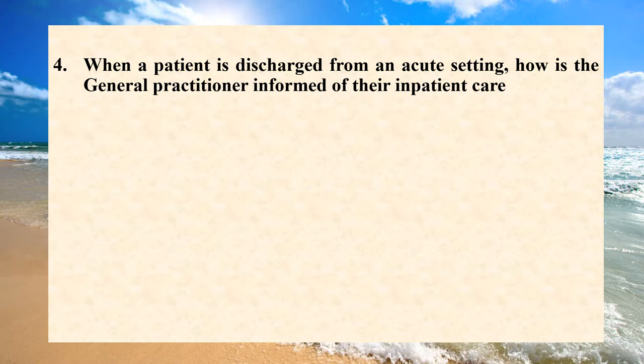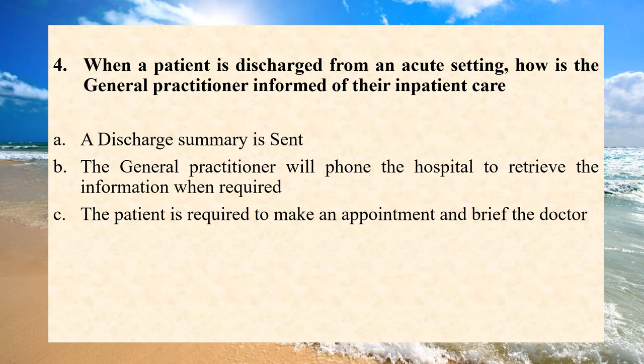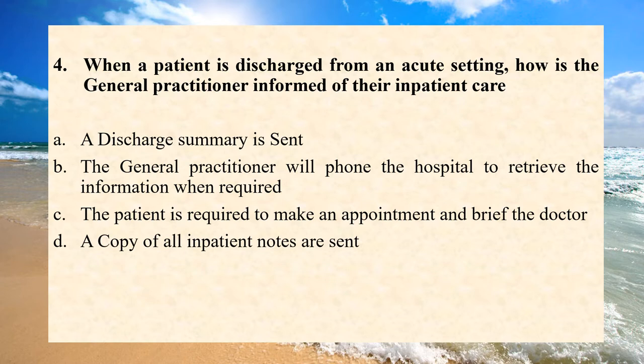When a patient is discharged from an acute setting, how is the general practitioner informed of their inpatient care? A. A discharge summary is sent. B. The general practitioner will phone the hospital to retrieve the information when required. C. The patient is required to make an appointment and brief the doctor. D. A copy of all inpatient notes are sent. Answer is A. A discharge summary is sent.